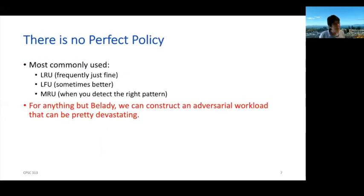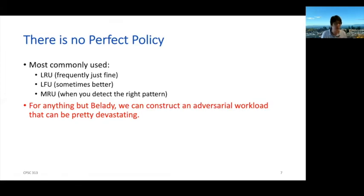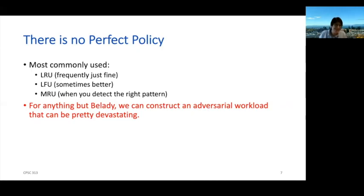At the end of the day, there really is no perfect cache replacement policy. LRU is often just fine and is perhaps the most commonly used one. LFU — least frequently used — is sometimes a little bit better, not always. But there are particular patterns you might want to be alert to, like iterating over a large item. In that case you might want to detect that and use something like MRU. For anything other than Belady's optimal algorithm — which is totally impractical because you can't predict the future — you can construct an adversarial workload that will make any policy perform badly. It's an optimization game: pick the best one for the workload you have. Unfortunately, you don't often get to change your replacement policy based on the workload; in hardware, you're stuck with whatever the hardware gives you.